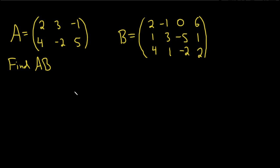In this problem we have two matrices and we're being asked to multiply them, so we'll find A times B. Matrix A has two rows and three columns, so it is a 2 by 3 matrix. Matrix B has three rows and four columns, so it is a 3 by 4 matrix.